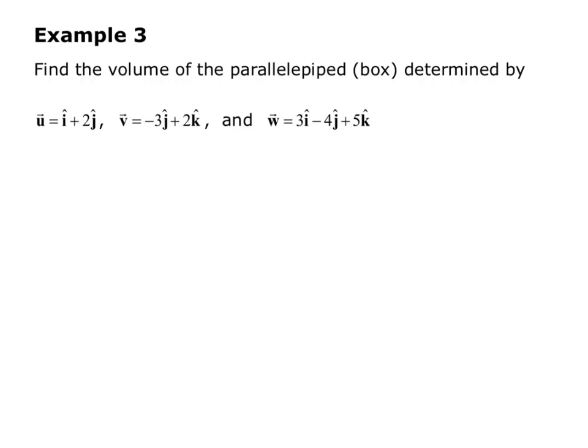Example 3 says find the volume of the parallelepiped determined by u = i + 2j, v = -3j + 2k, and w = 3i - 4j + 5k. The volume is the determinant of the 3×3 matrix with u, v, and w as the rows: u = (1, 2, 0), v = (0, -3, 2), and w = (3, -4, 5).